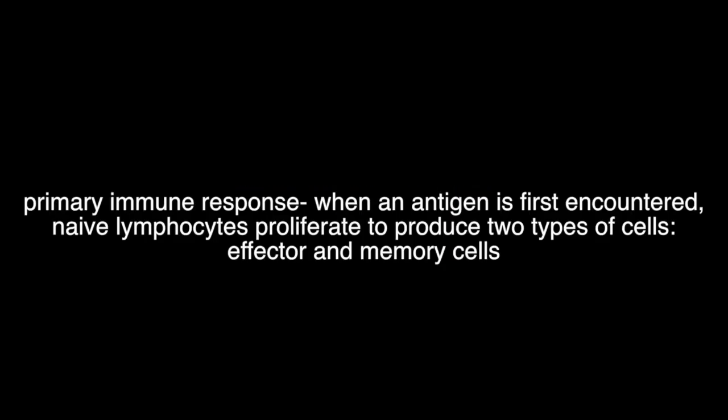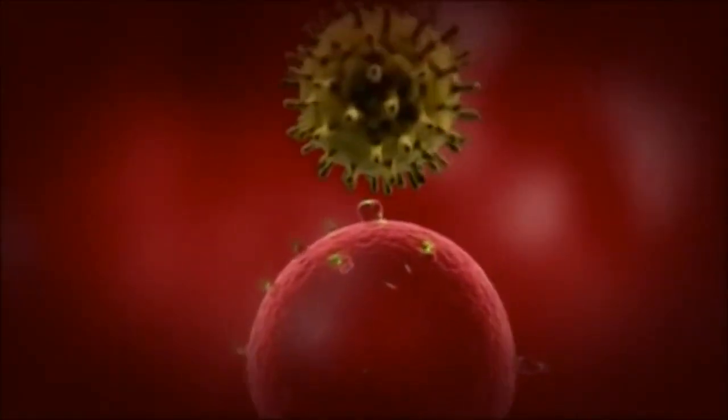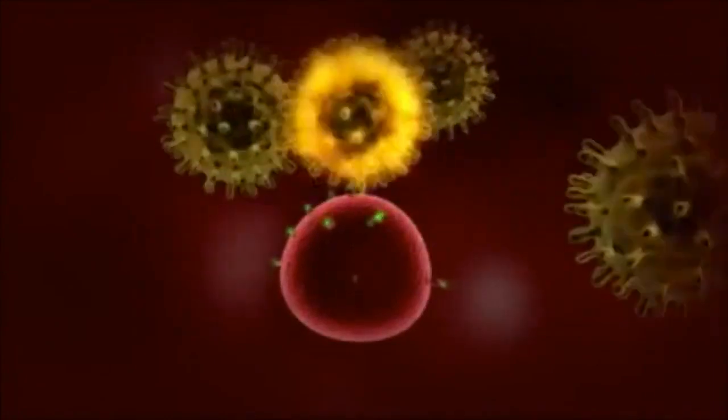In the effector phase of the primary immune response, when an antigen is first encountered, naive lymphocytes proliferate to produce two types of cells: effector and memory cells. The activated B cells, helper T cells, and cytotoxic T cells give rise to effector cells that carry out the attack, and memory cells which are long-lived and can divide on short notice to produce more effector and memory cells. Effector B cells, or plasma cells, secrete antibodies that reside in the plasma and help indirectly fight the antigen as part of humoral immunity. Effector T cells secrete cytokines and other molecules to fight the invading antigen — this is cell-mediated immunity.